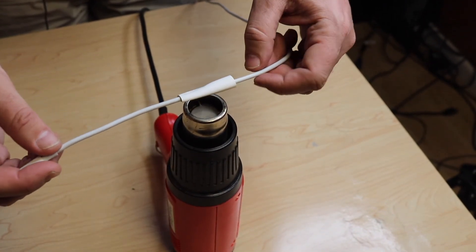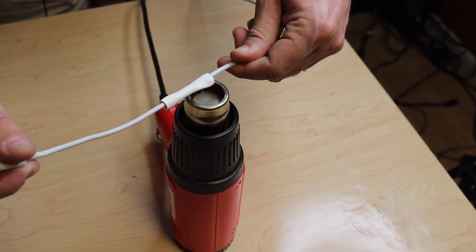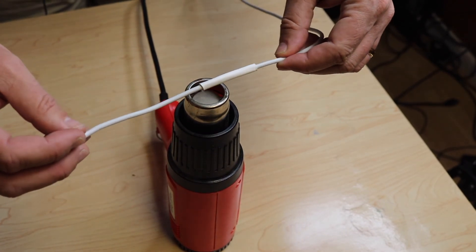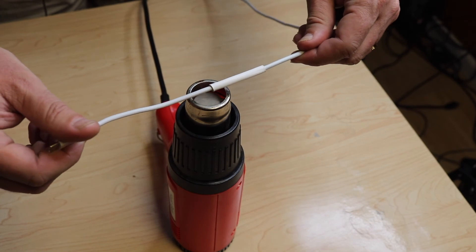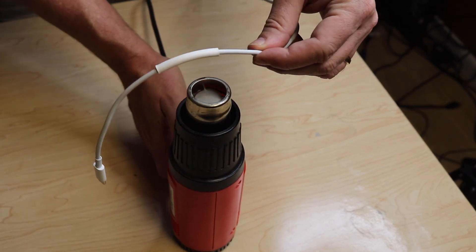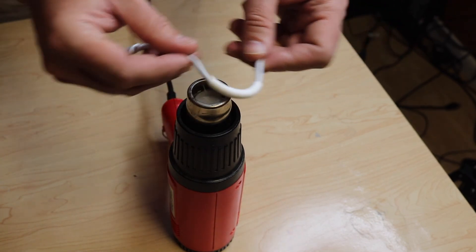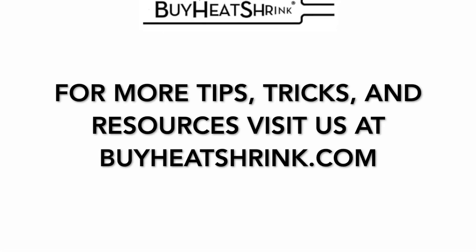You can see it's starting to shrink already. And I'm going to just twist it a little bit here. Make sure I get even heat on here. And we are all done. And then it's pretty sturdy on here and still somewhat flexible. Thank you.